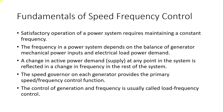The satisfactory operation of the power system requires maintaining a constant frequency. The frequency in a power system depends on the balance of generator mechanical input and electrical load power demand. P electrical should be equal to P mechanical — in other words, at a system level, electrical demand should be equal to the power generated. As long as demand equals generated power, the system frequency remains at its nominal value. For a 60 Hz system the nominal frequency will be 60 Hz; for a 50 Hz system it will be 50 Hz. If generation increases beyond demand, frequency will increase; when demand becomes greater than generation, system frequency will decrease.